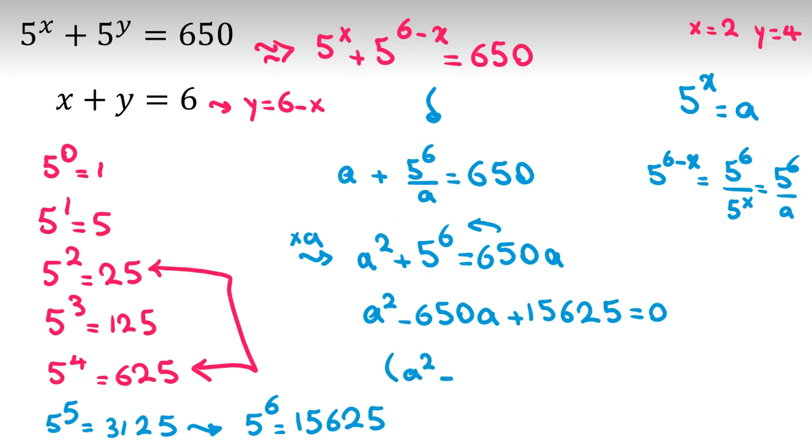Let's factorize this. I can say (a minus 625)(a minus 25) equals 0.